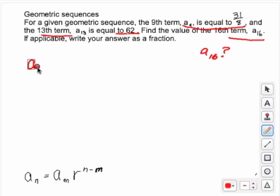So we're basically going to take a13, set it equal to a sub 9 times r to the n minus m, so 13 minus 9.